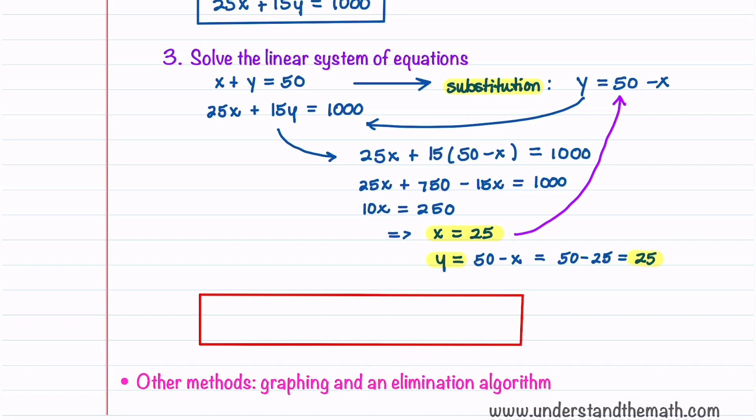So the solution to this problem is that we need to use 25 milliliters of 25% saline and 25 milliliters of 15% saline solution. This is an example of where an application problem can be solved by solving a system of linear equations.